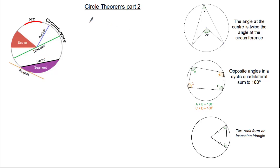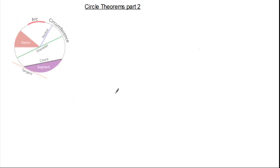Hello and welcome to part 2 of circle theorems. From our last video we know there were 7 circle theorems. Here's a recap of what we covered in the last tutorial. These are our two circle theorems: the angle at the centre is twice the angle at the circumference — remember it doesn't always look like an arrowhead — and the opposite angles of a cyclic quadrilateral sum to 180 degrees. This is not a circle theorem but a key angle fact: two radii form an isosceles triangle. It's also important to know the properties of our circle, so I'll keep them here for reference.